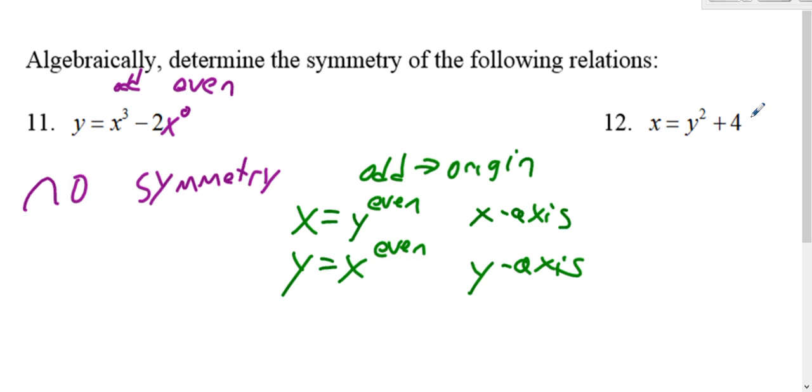Here we have x equals y squared plus four. Remember, four is a constant like y to the zero or x to the zero. So we have a two which is even, and a zero which is even. We have all evens, which is x-axis.